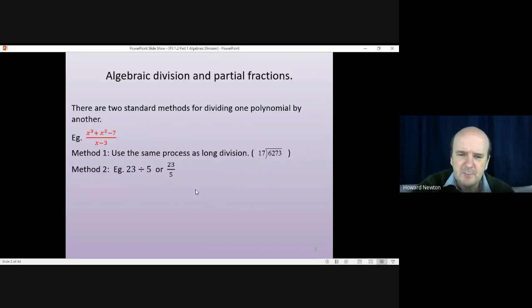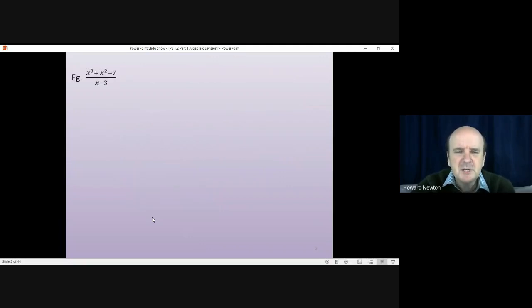for instance, 23 divided by 5 or 23 over 5, in this sense that if you have 23 divided by 5, you could say that 23 is 5 times 4 plus 3, where 4 is the quotient and 3 is the remainder. You can use the same process with algebraic division.